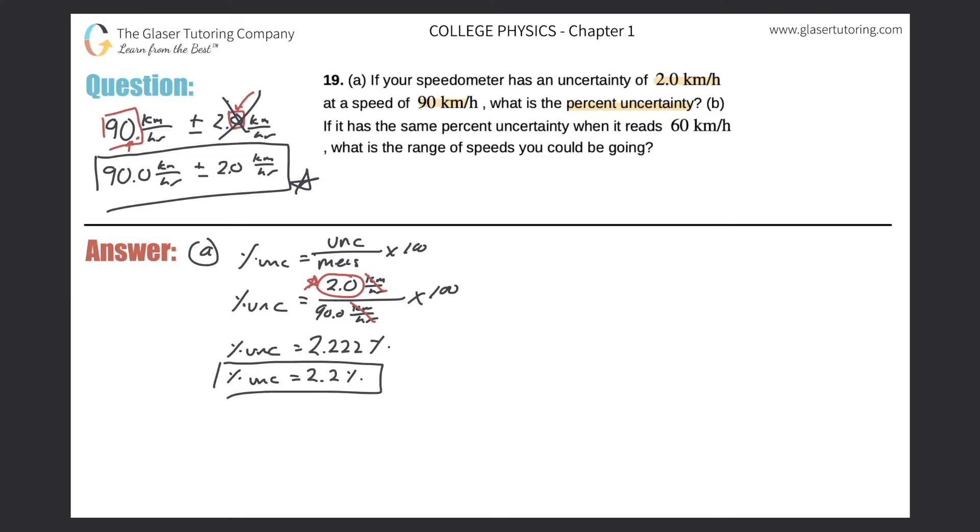Now part B says if it has the same percent uncertainty when it reads 60 kilometers per hour, what is the range of speed you could be going? Again same issue here, this number really should be written as 60.0 kilometers per hour. So now I'm going to use that in my calculations.